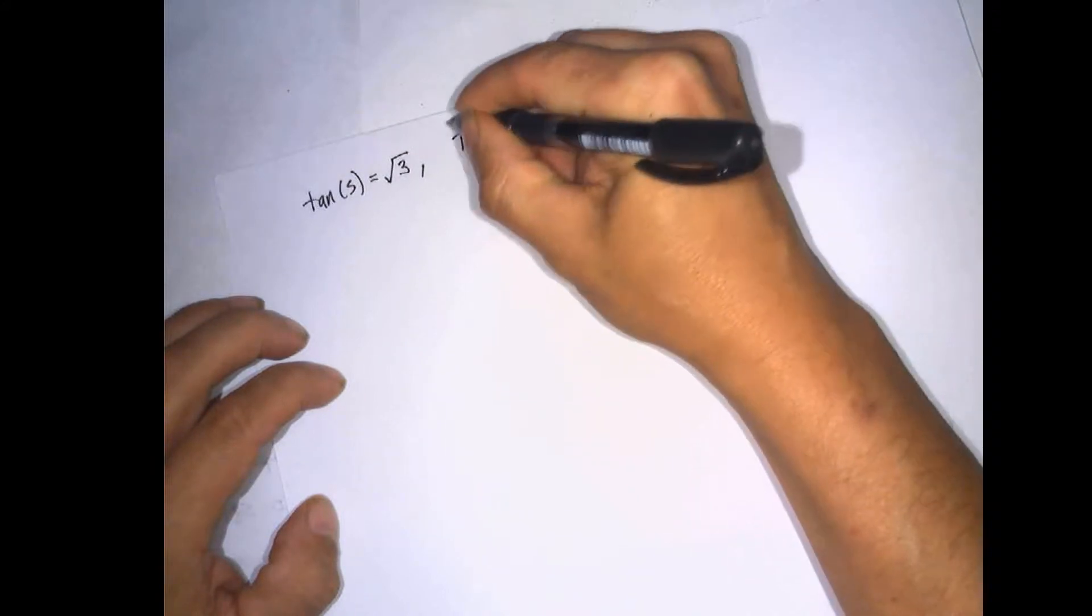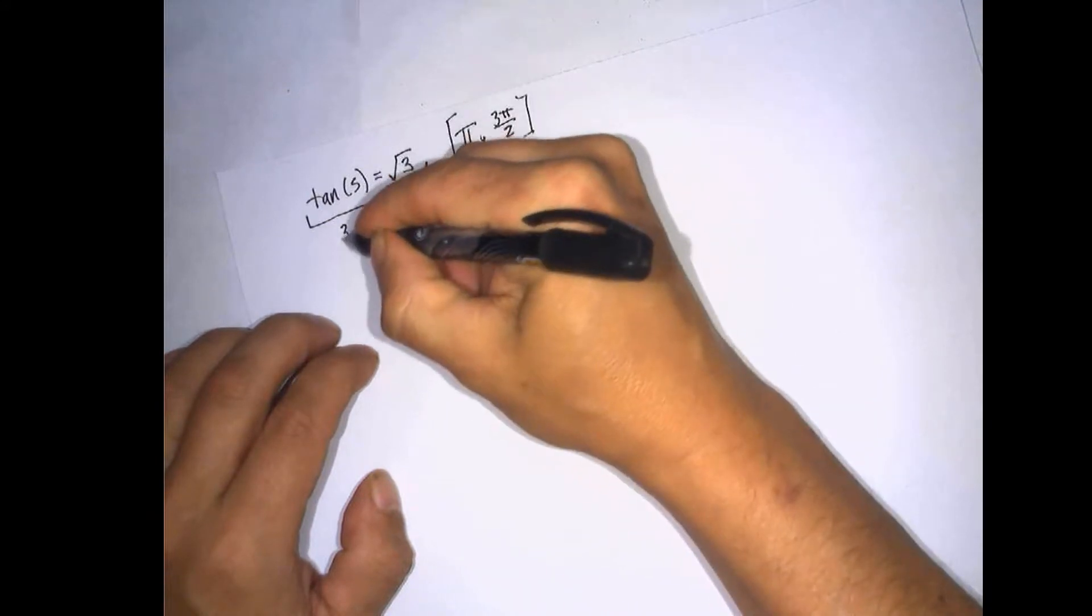Okay, so this tells you that you're dealing with the 30, 60, 90 triangle.